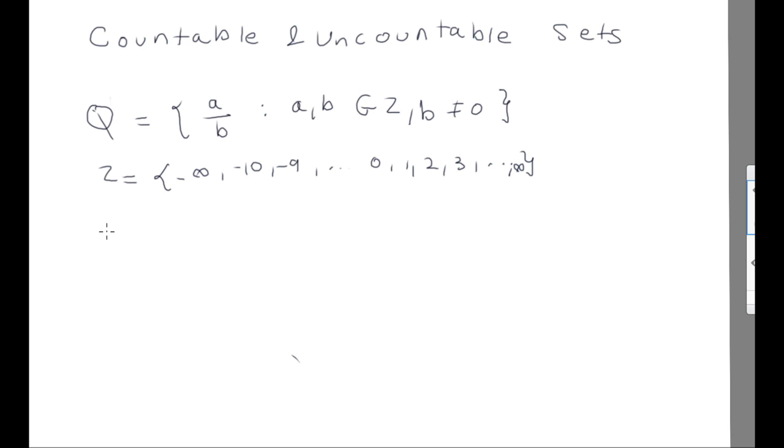Because we can create a bijector mapping from natural numbers N to Q and N to Z, we can see they are countable. I will show you now. N is from 1 to 2, 3, and so on.